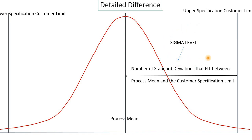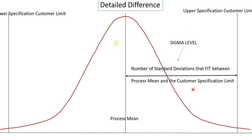On the screen, the specification limits are equidistant from the mean — the upper limit and lower limit defined by the client are the same distance from the mean. In this case, you can fit standard deviations on either side. But in practical life this is not always the case — sometimes the lower limit or the upper limit can be closer to the mean. So what do we do then?